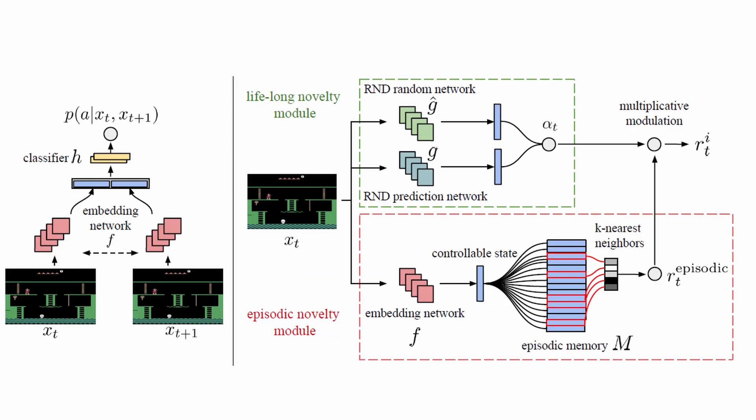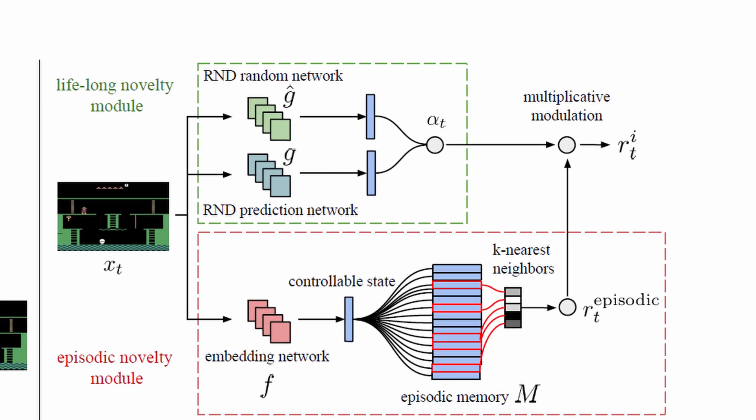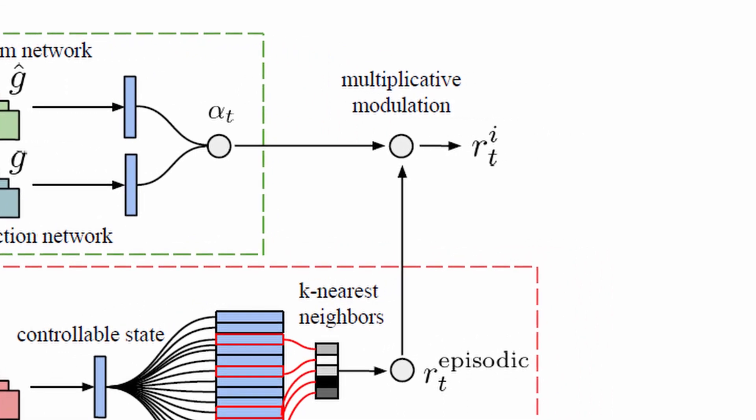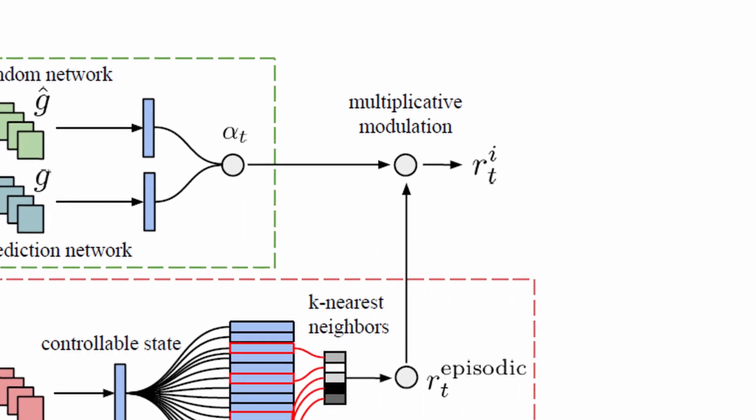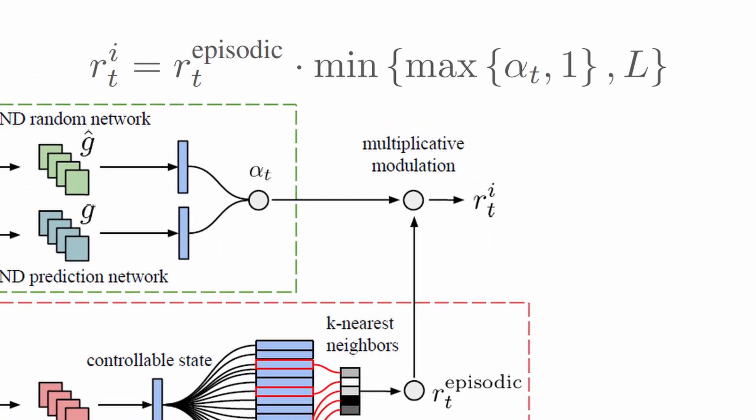Now, what I left out from the reward generator module is the way in which the episodic and lifelong rewards are combined. They do it by modulating the exploration bonus with the lifelong curiosity factor alpha.